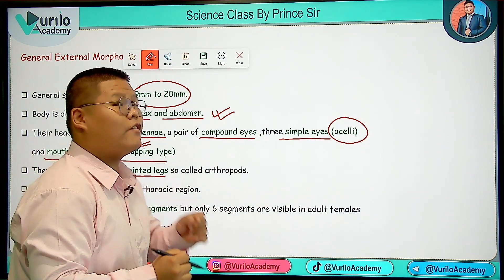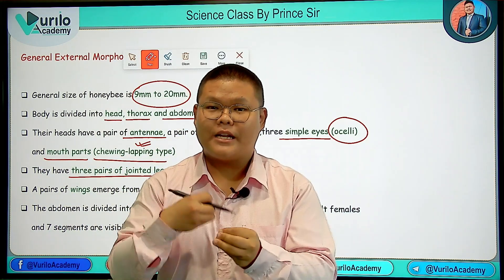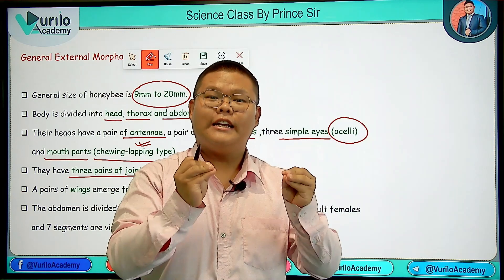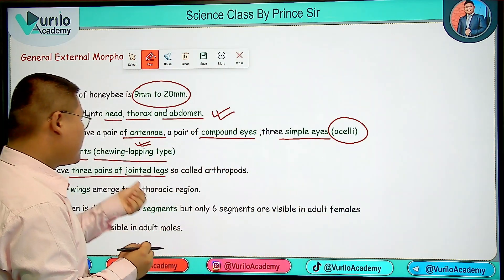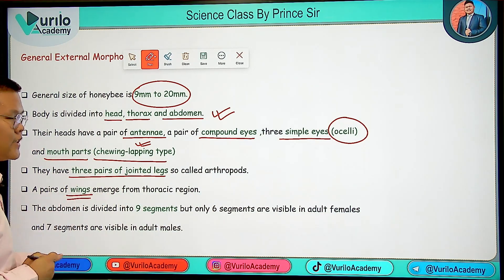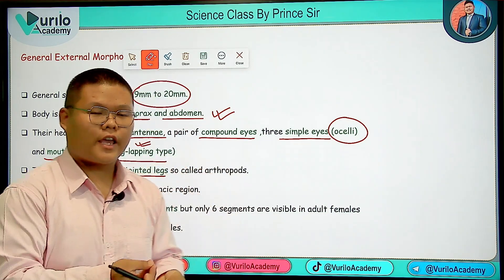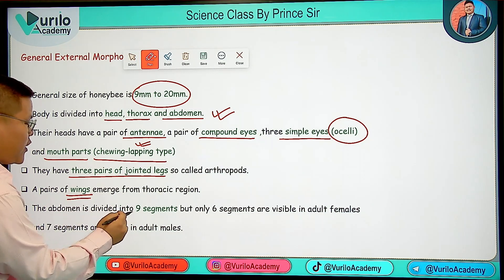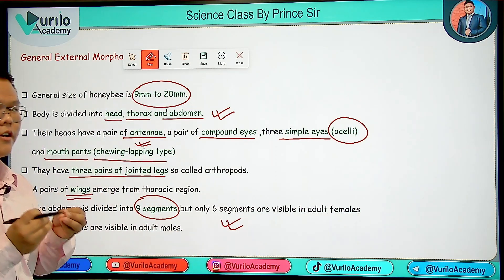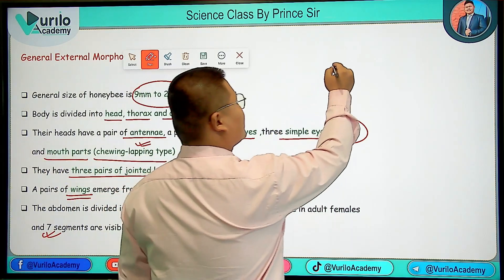An important feature is the mouthparts, which are of the chewing or lapping type. There are three pairs of jointed legs — this is why it is called an arthropod and is classified as an insect. There are also two pairs of wings from the thoracic region, and the abdomen has nine segments, with four segments visible in adult females and seven segments visible in adult males.